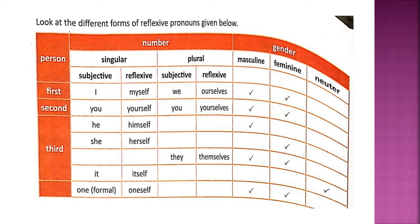Let us look at the table to understand more about reflexive pronouns. First person singular 'I' changes into myself, and plural 'we' changes into ourselves. Second person singular 'you' changes into yourself, and plural into yourselves. Third person: he changes into himself, she changes into herself, it changes into itself, and they changes into themselves.